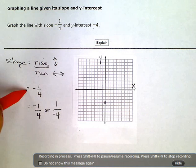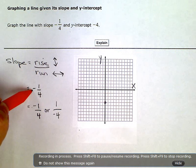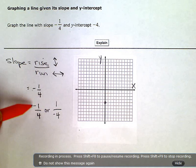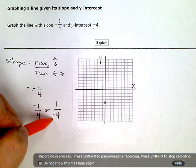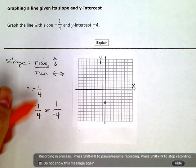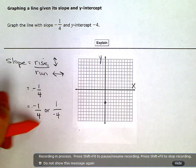Our slope is negative one-fourth. When you have a negative, you get to choose whether you want to put the negative on the one in the top, or in the bottom with the four. But only one of those numbers gets the negative. I'm going to use this one.